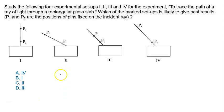Study the following four experimental setups 1, 2, 3, and 4 for the experiment to trace the path of a ray of light through a rectangular glass slab. Which of the marked setups is likely to give the best result? P1 and P2 are the positions of the pins fixed on the incident ray.